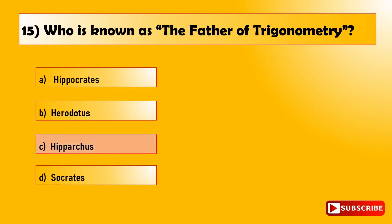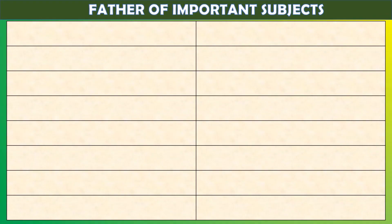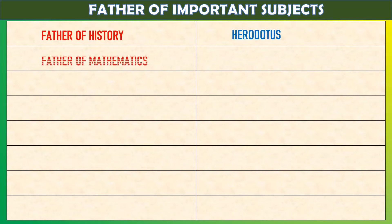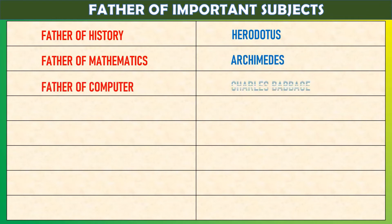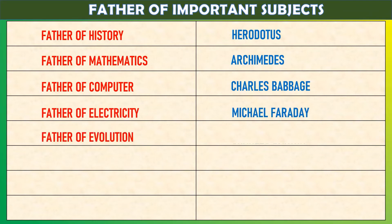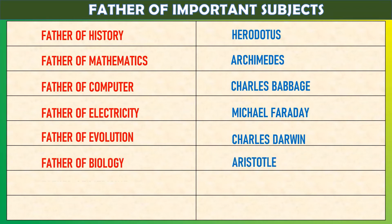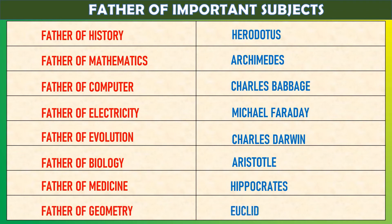Let us see a list of the father of some 40 subjects. Father of history: Herodotus. Father of mathematics: Archimedes. Father of computer: Charles Babbage. Father of electricity: Michael Faraday. Father of evolution: Charles Darwin. Father of biology: Aristotle. Father of medicine: Hippocrates. Father of geometry: Euclid.